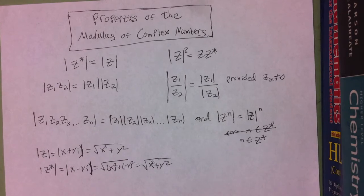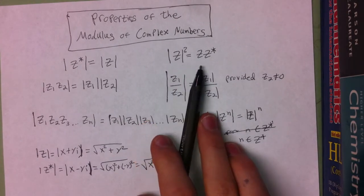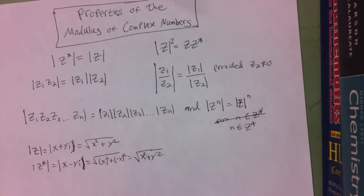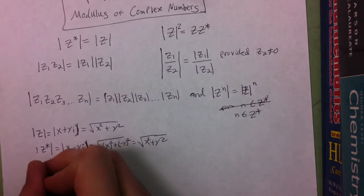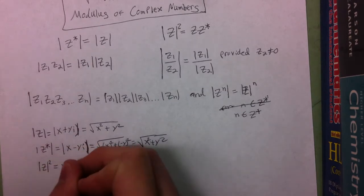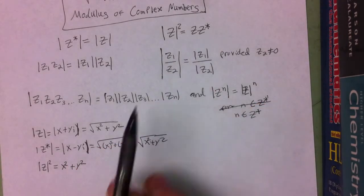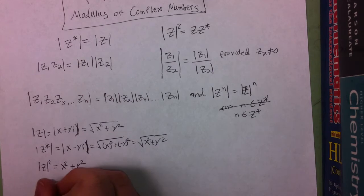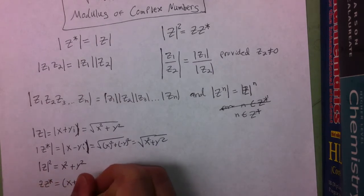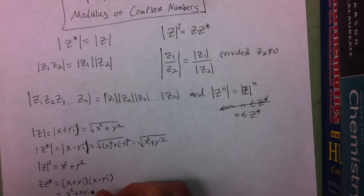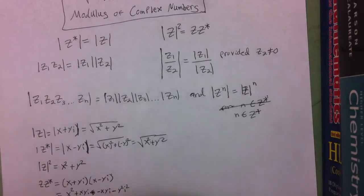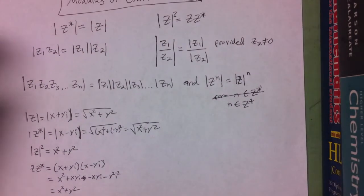So we can see that those are the same thing. The second property is that the modulus of z squared is equal to z times z conjugate. The modulus of z is x squared plus y squared, so the modulus of z squared is just x squared plus y squared. And if we take z times z conjugate, that's equal to x plus yi times x minus yi, which gives us x squared plus xyi minus xyi minus y squared i squared, which is just x squared plus y squared. So we can see that that is also true.